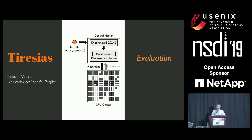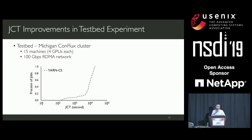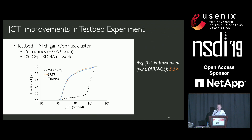We have built a prototype system of Tiresias with a central master for the entire cluster that makes scheduling and placement decisions. We evaluated our system in both testbed experiments and large-scale trace-driven simulations. Our testbed has 15 machines with four GPUs each, all connected by a 100 gigabits per second RDMA network. This figure shows the job completion time distribution with different solutions. We also implemented an SRTF-based solution provided with job execution time from previous runs. Compared to YARN Capacity Scheduler, our system decreases queuing delay greatly, and the average JCT is improved by 5.5 times. More importantly, Tiresias's performance is comparable to SRTF, which has full knowledge of deep learning jobs.